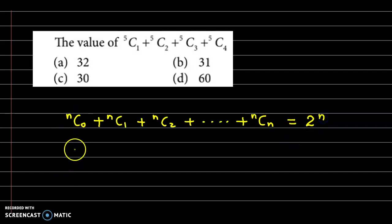If we get 5C0 plus 5C1 plus 5C2 plus 5C3 plus 5C4 plus 5C5, this value is 2 raised to 5.